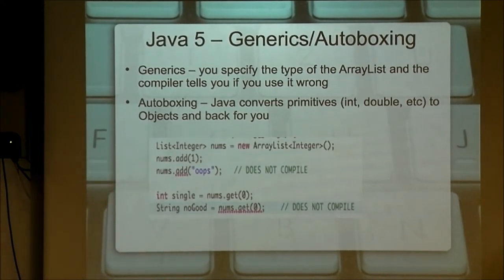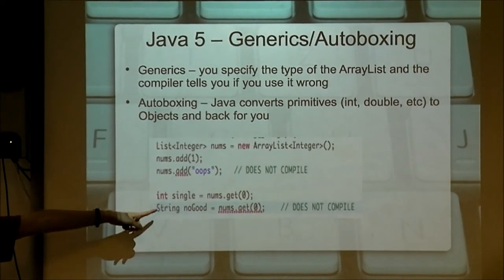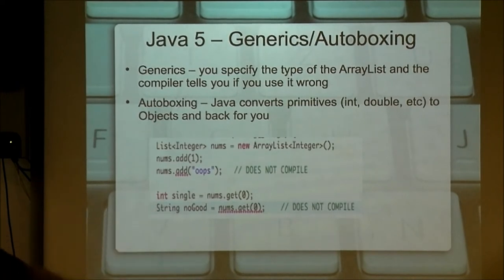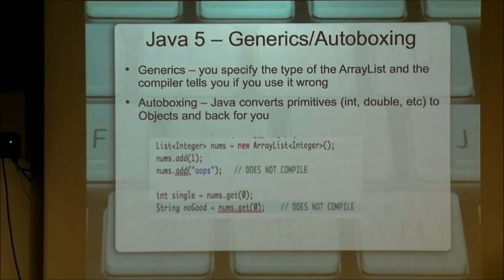When you create an ArrayList in Java 5, you get to specify the type of the ArrayList. So here I'm saying I have a list of integers — I don't want to put anything in it that's not an integer. If I try to get anything out that's not the right type, don't let me. This is really good for everybody, but especially for new programmers — next year's freshmen — because it's easy to lose track of what's in your list. And if the compiler tells you, you don't have to waste time running the code only to find out on the robot that this code is no good.